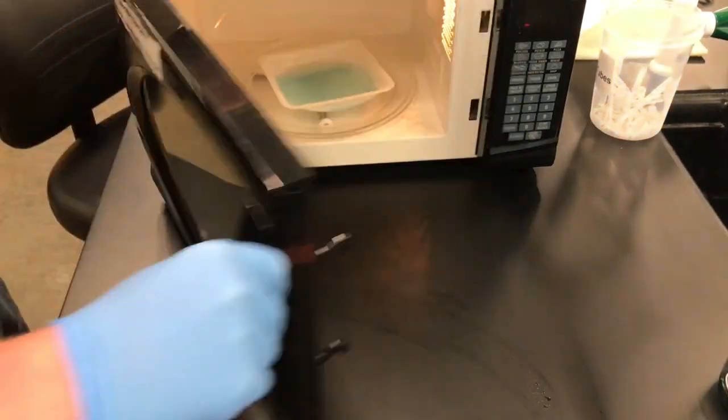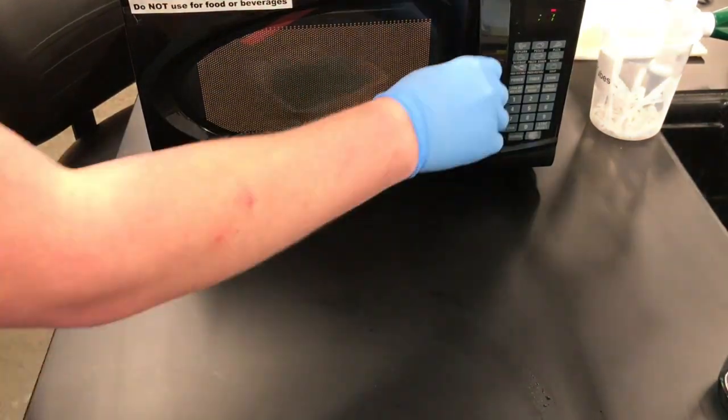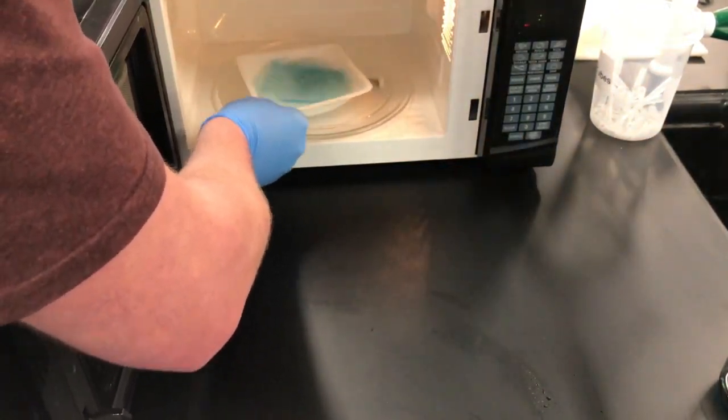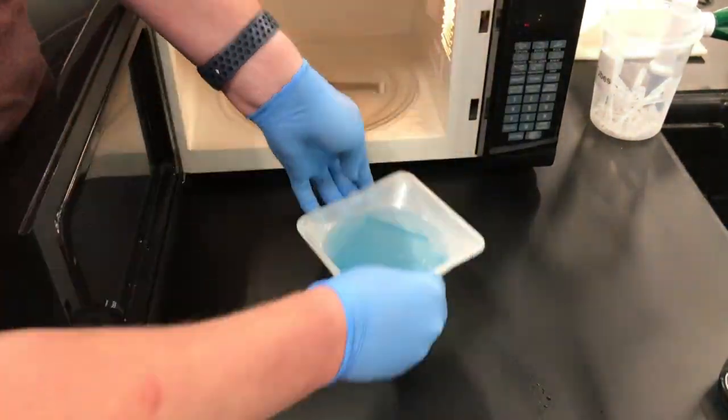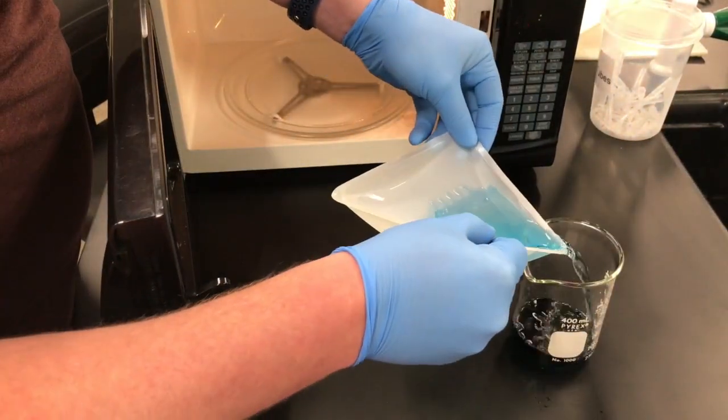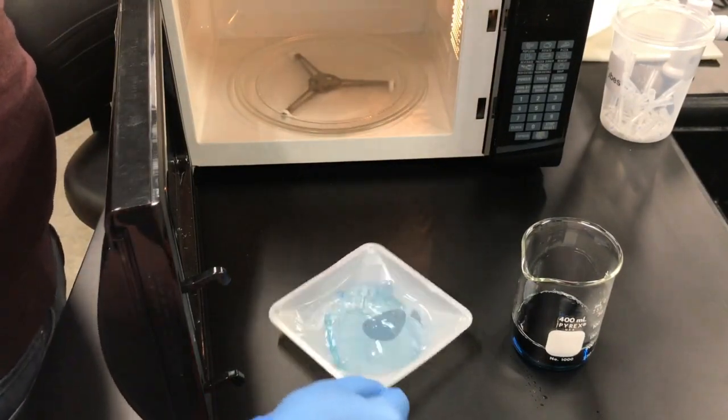The destaining process is a mixture of microwaving the gel and water for about 10 seconds, taking it out, mixing it up, and then doing it again and again. Eventually the dye will come out of the gel but it will stay bound to the protein. This way we'll get the high contrast and we'll be able to see our protein bands.